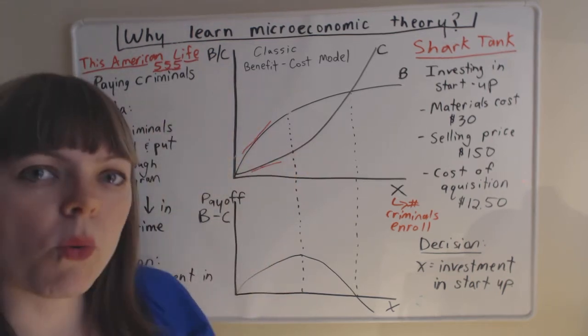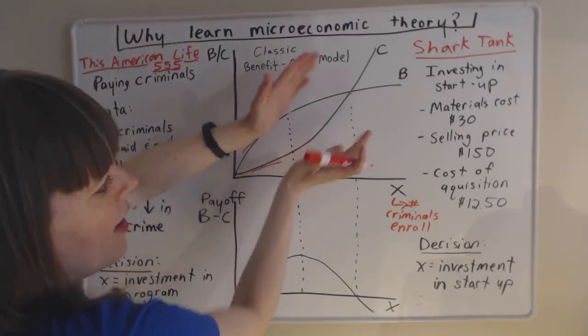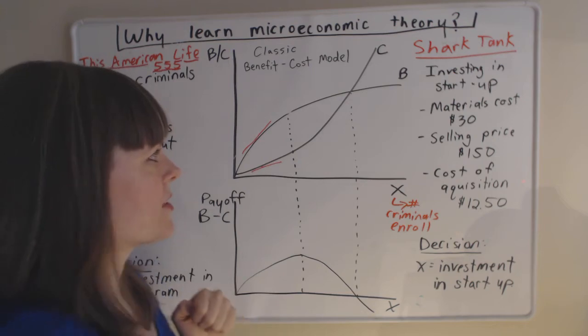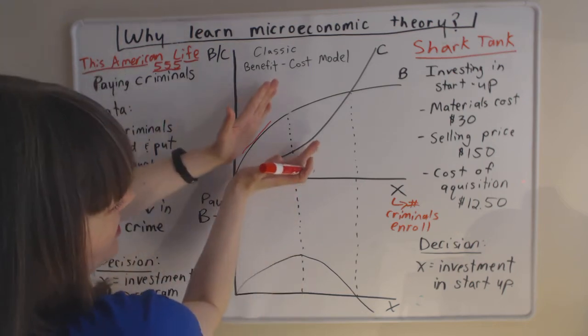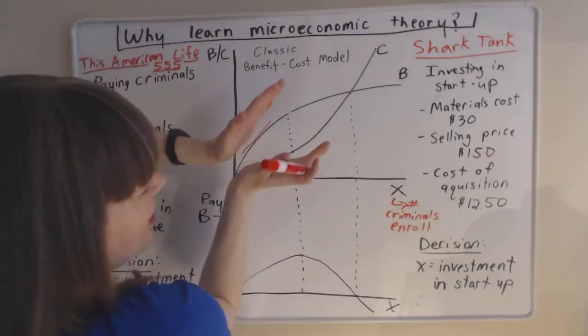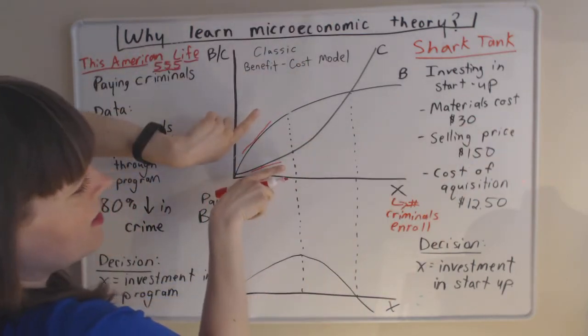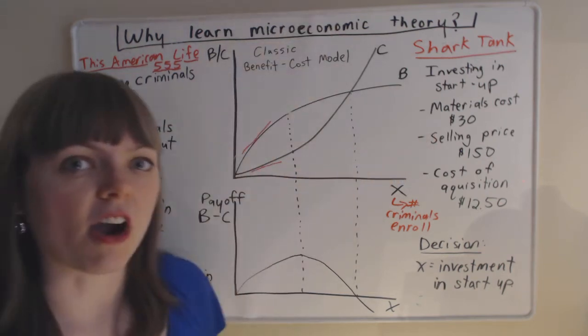But what we cannot do is assume that the benefit and cost will stay the same as we enroll more and more criminals in the program. If this were to stay the same, then we should invest infinite dollars in the program because we can see our benefit minus cost would be infinite if these data trends continue exactly like they are.